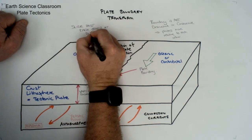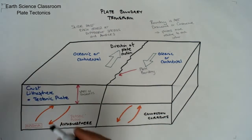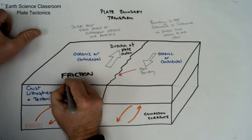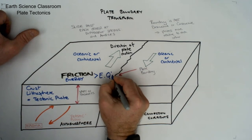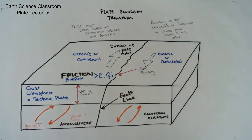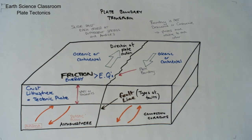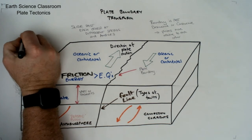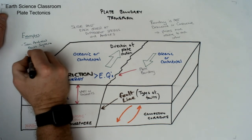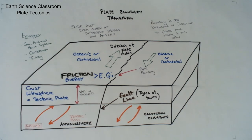The variables at this boundary are the plate's composition, density, types of plates — oceanic and continental — and the rate and direction of motion, which impact the amount of friction and resulting earthquakes along these fault lines. The classic example for the transform plate boundary is the San Andreas fault system, located mostly in California, which involves the Pacific oceanic plate and the North American continental plate sliding past each other at different angles and speeds.